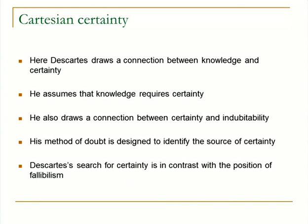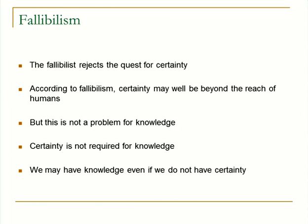You can see a connection that Descartes is making between knowledge and certainty. He seems to be assuming that in order to have knowledge, we require certainty. At the same time, he's making a connection between certainty and inability to doubt, or indubitability. This method of skeptical doubt is his procedure for trying to figure out how it is that we can be certain of something. What Descartes is up to is something that contrasts with fallibilism.